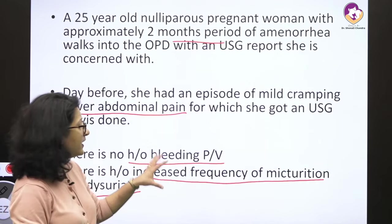So in that scenario, it is not yet early pregnancy loss. Now tweaking the findings: the same woman, but the period of gestation is now 7 weeks. The transvaginal sonography reveals an intrauterine gestational sac with an embryo inside, and the crown rump length is 10 mm — yet there is no cardiac activity. This is what constitutes early pregnancy loss: when the crown rump length is more than 7 mm and there is still no cardiac activity.